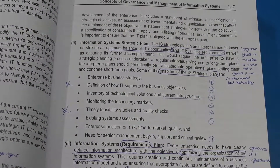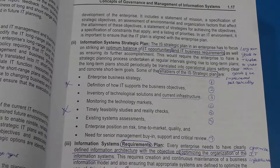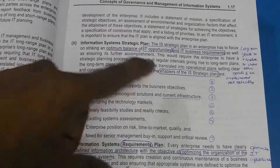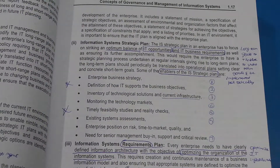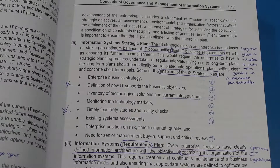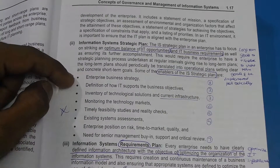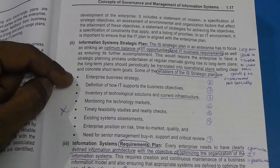The second point is the Information Systems Strategic Plan. This deals with, based on the Enterprise Strategic Plan, how will the IT assets of the organization support that enterprise to achieve that plan. We will look at what are the enablers of this plan. This is quite important from an exam point of view, and you can rearrange the points here to get a more logical connect.